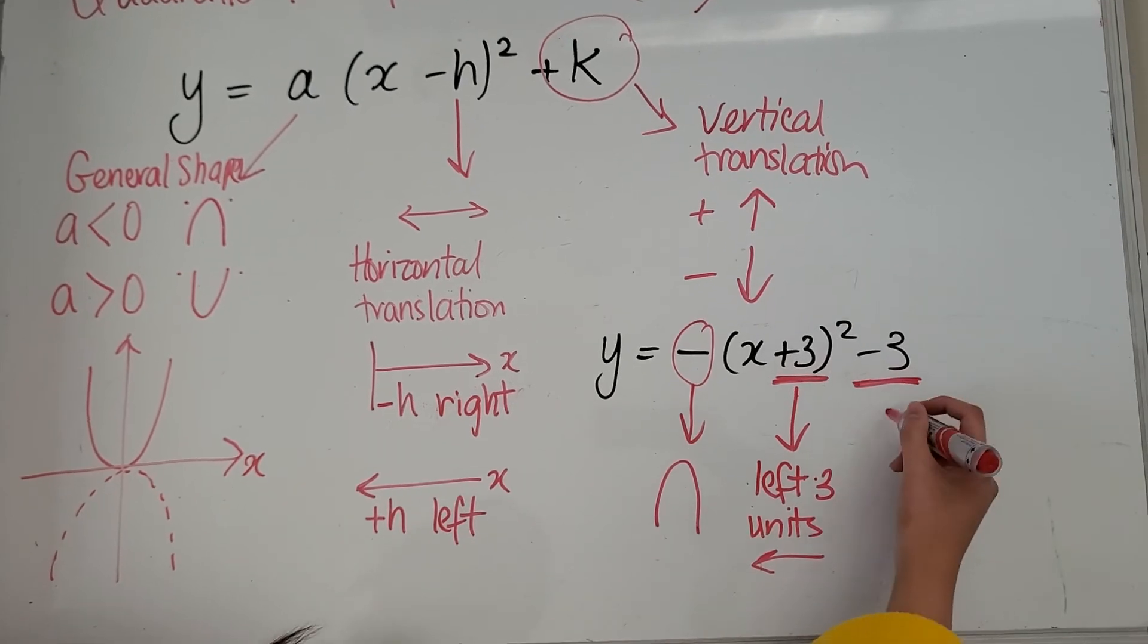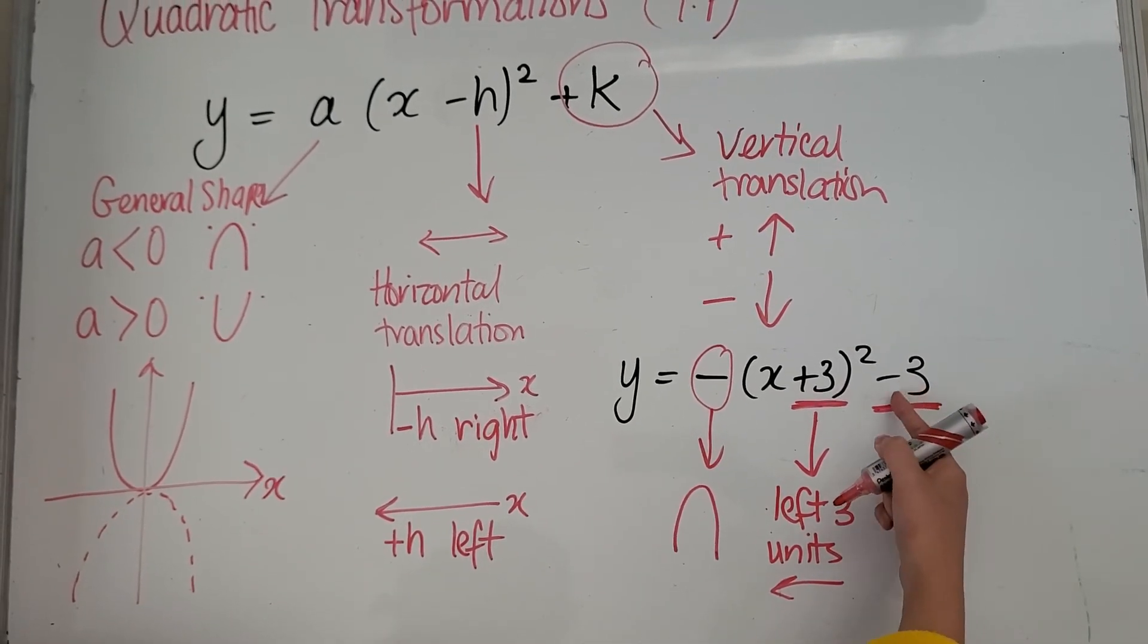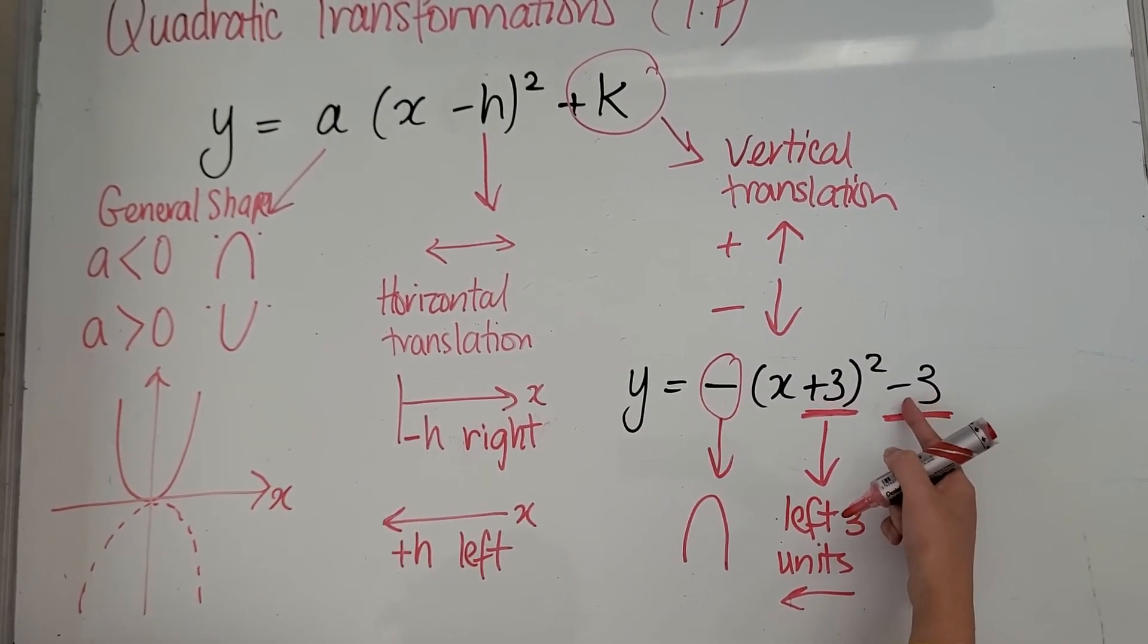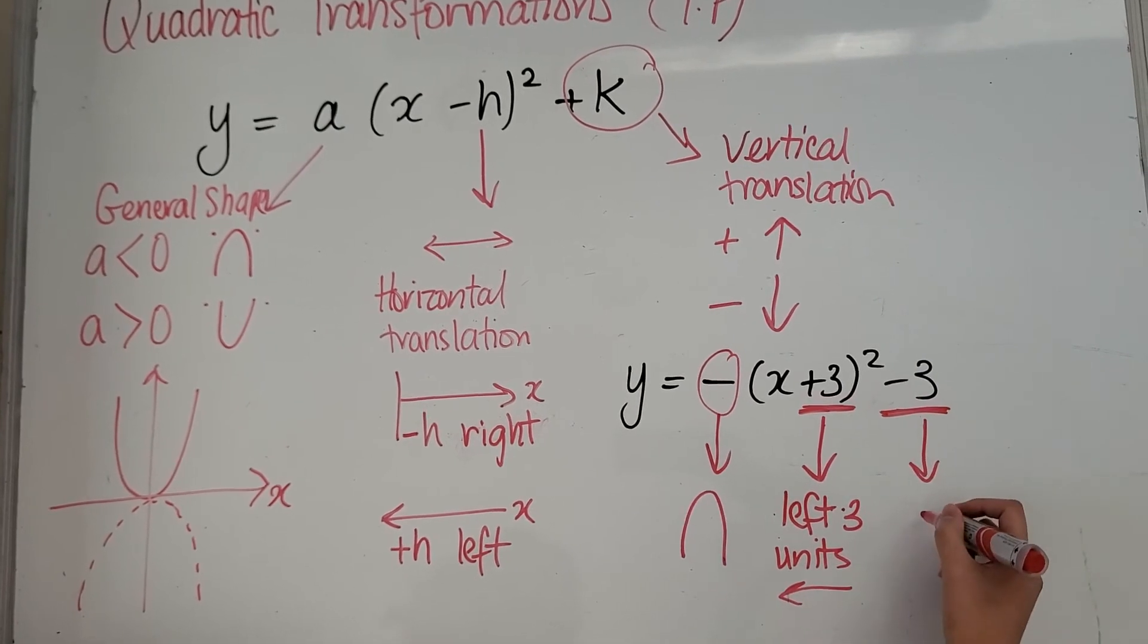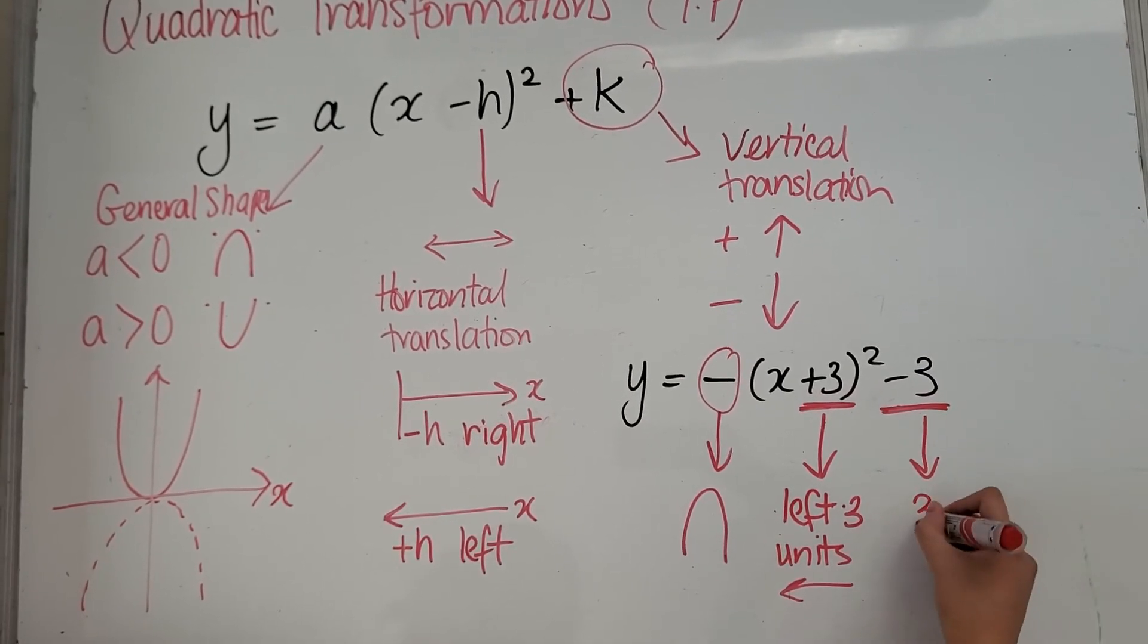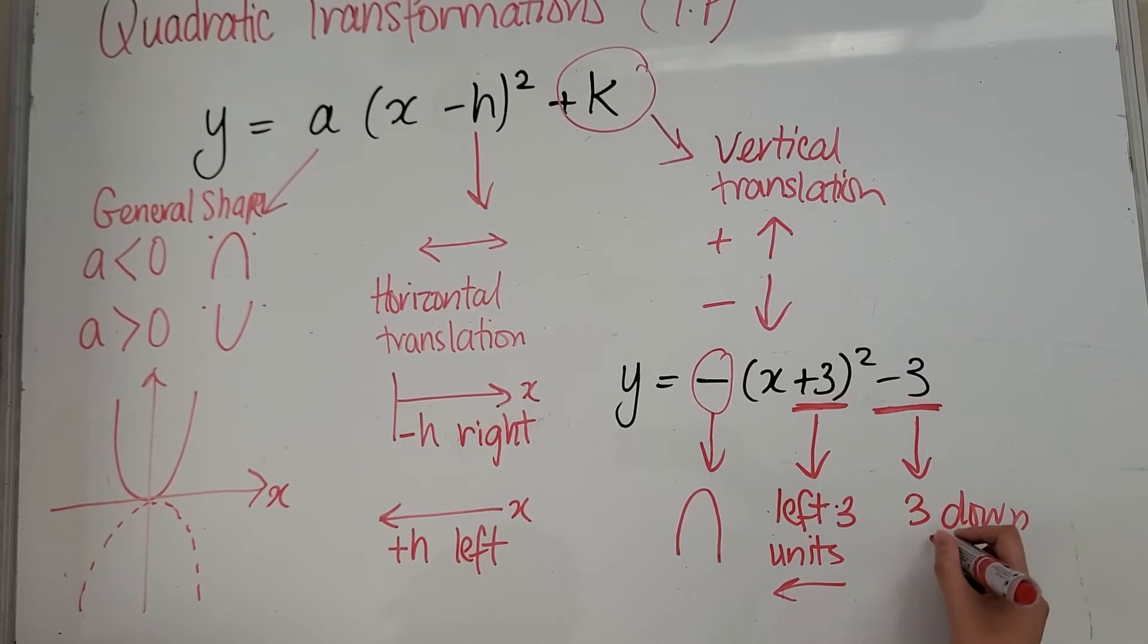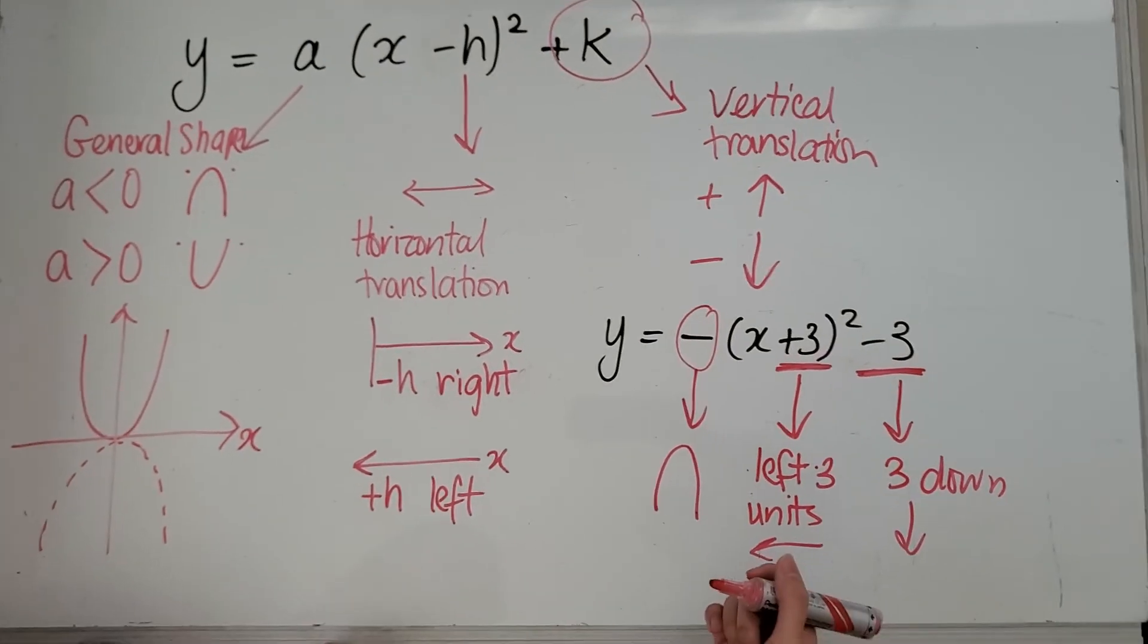Finally, your last term, negative three. It's not in brackets, so the sign doesn't swap or anything. So negative three goes three down. Translation's three down. That's all.